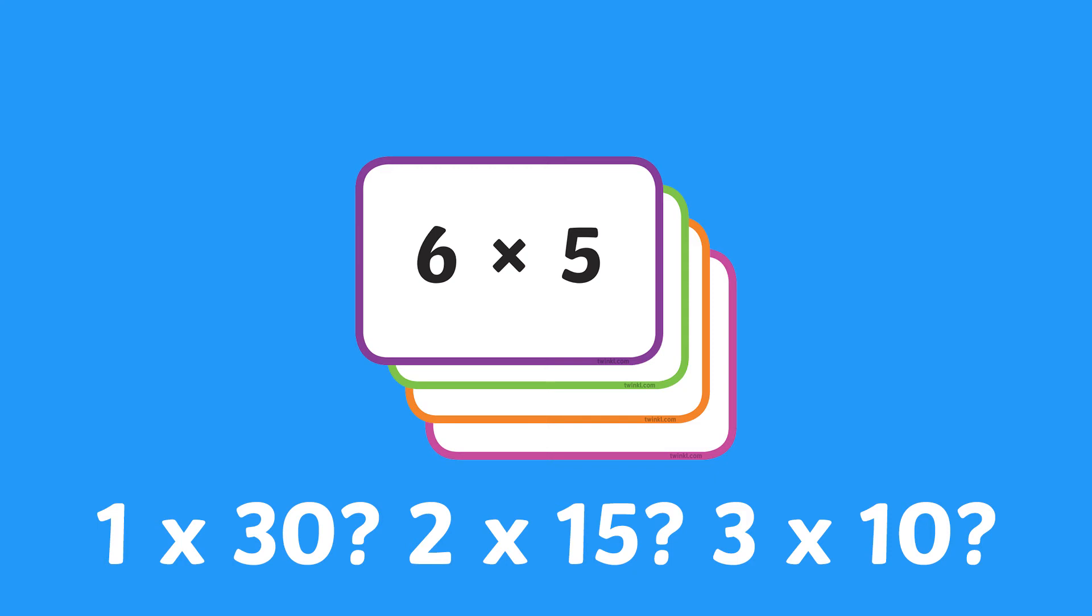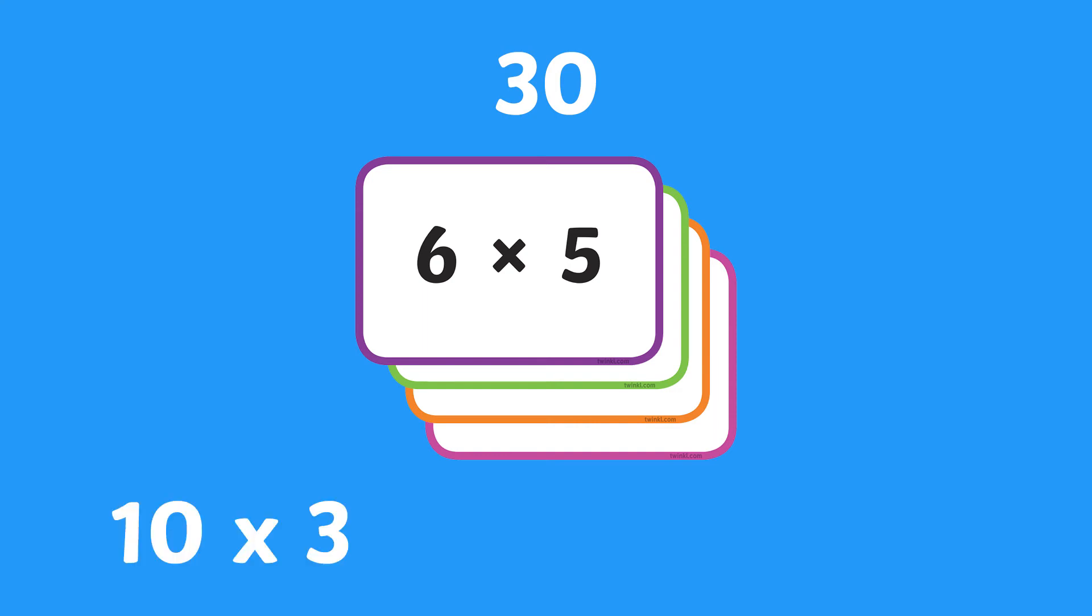So 6 times 5 might equal 30, but so does 10 times 3, 40 take away 10, and 16 plus 14. These sums all equal 30. As an extra level of difficulty, try using multiple operations and BODMAS to make a new sum.